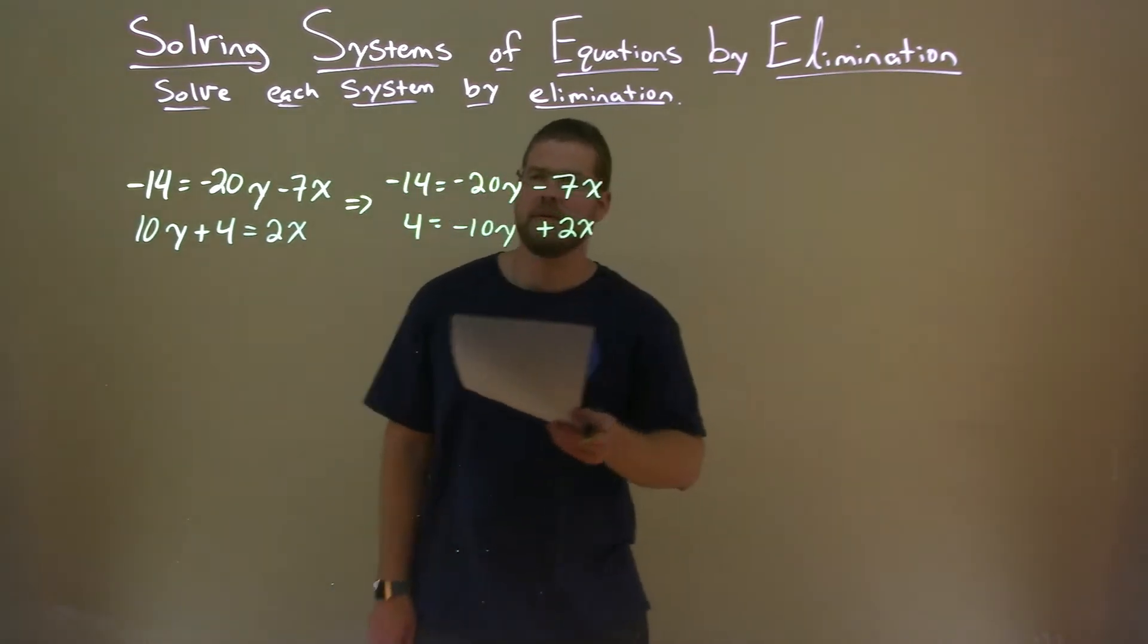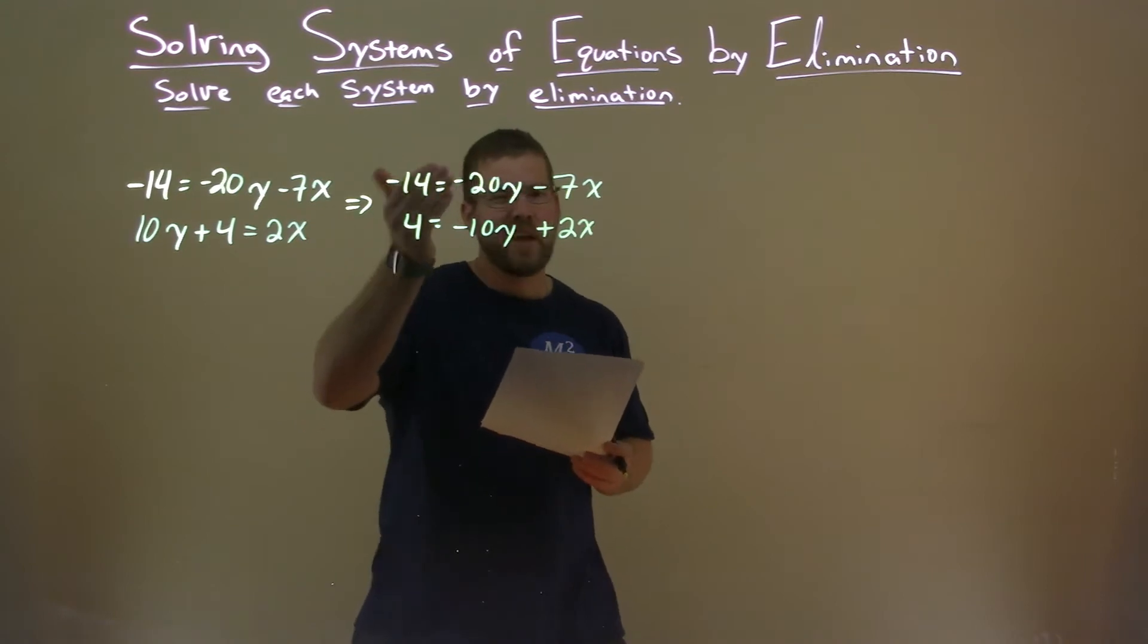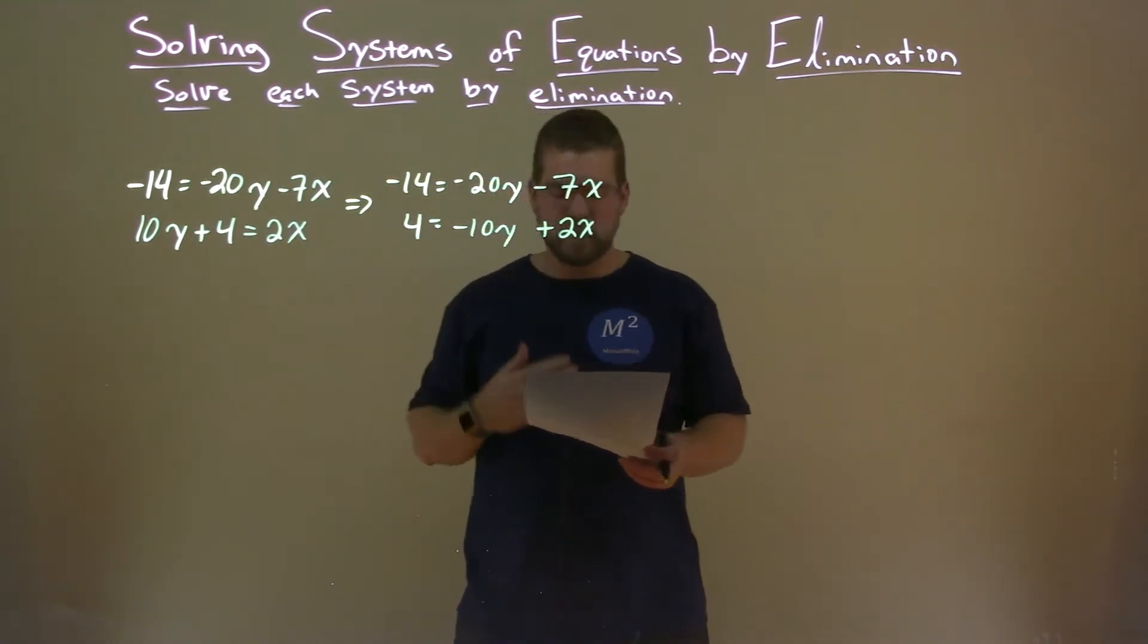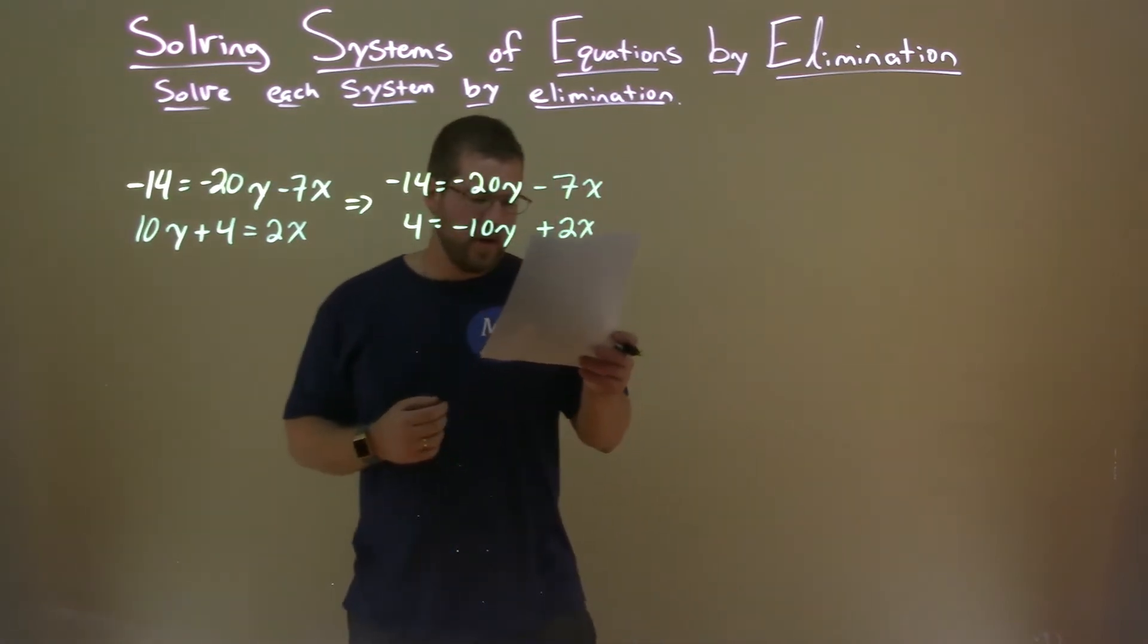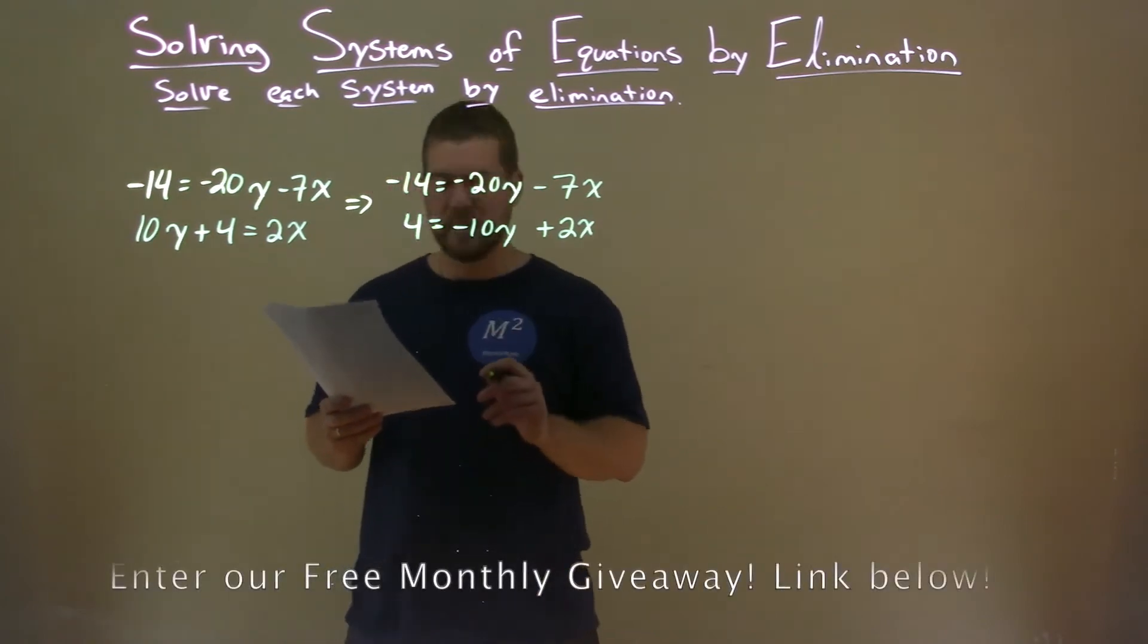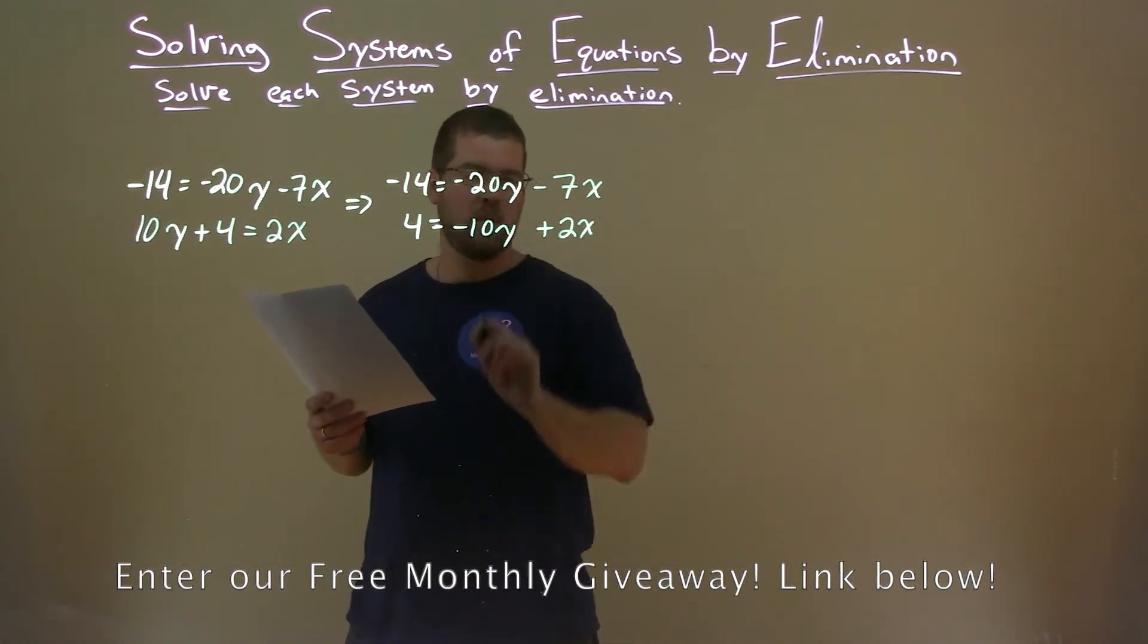So now we've got to eliminate. We can't just add these two equations. Nothing that we add together really will eliminate a variable. What variable should we try to eliminate? I'm going to try to eliminate the y's. The second equation, I can see if I multiply it by just a negative 2, we'll have a positive 20y here, and the y's will cancel.